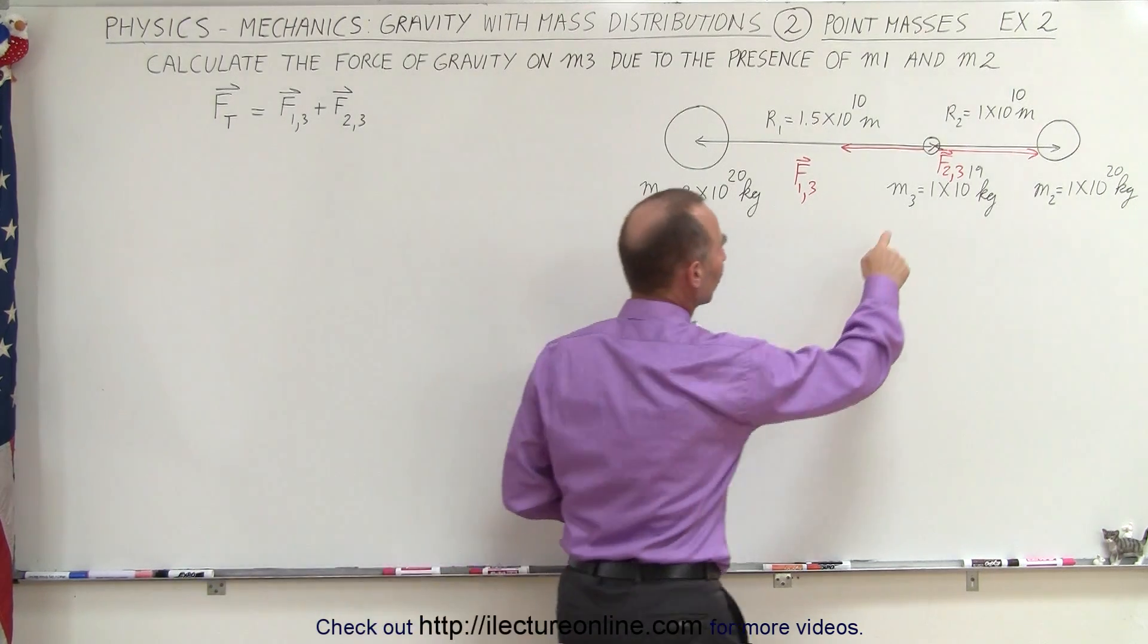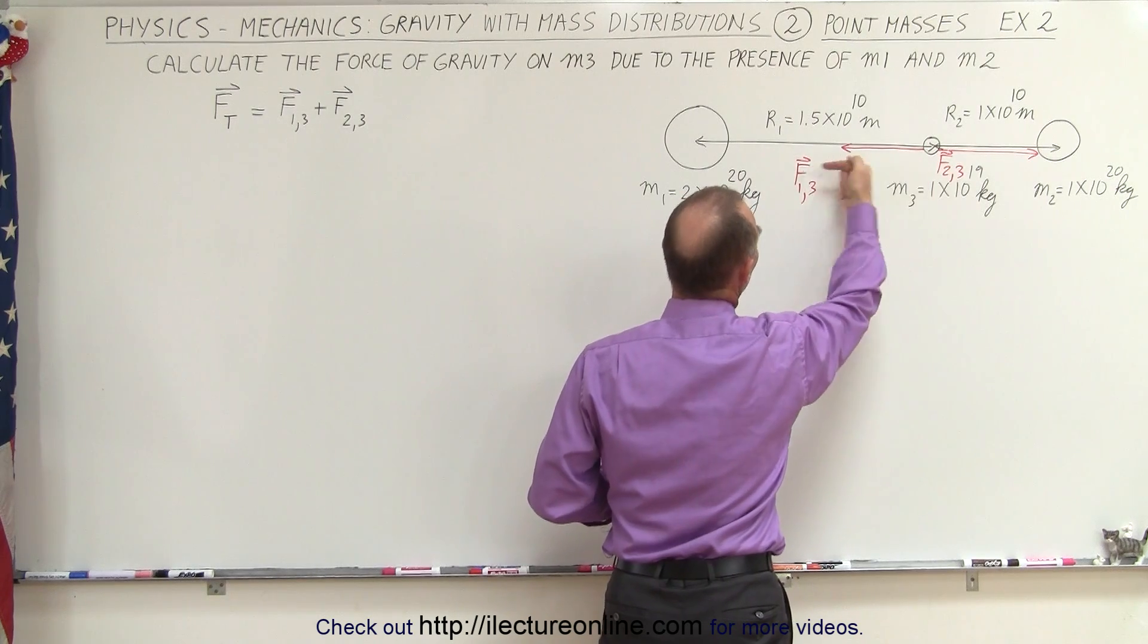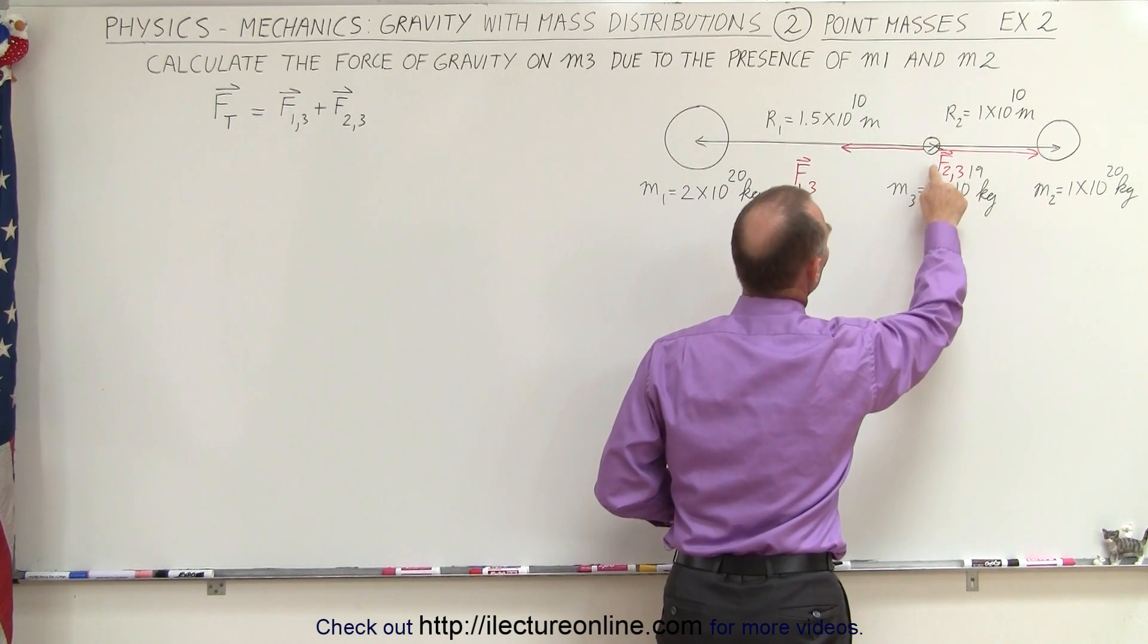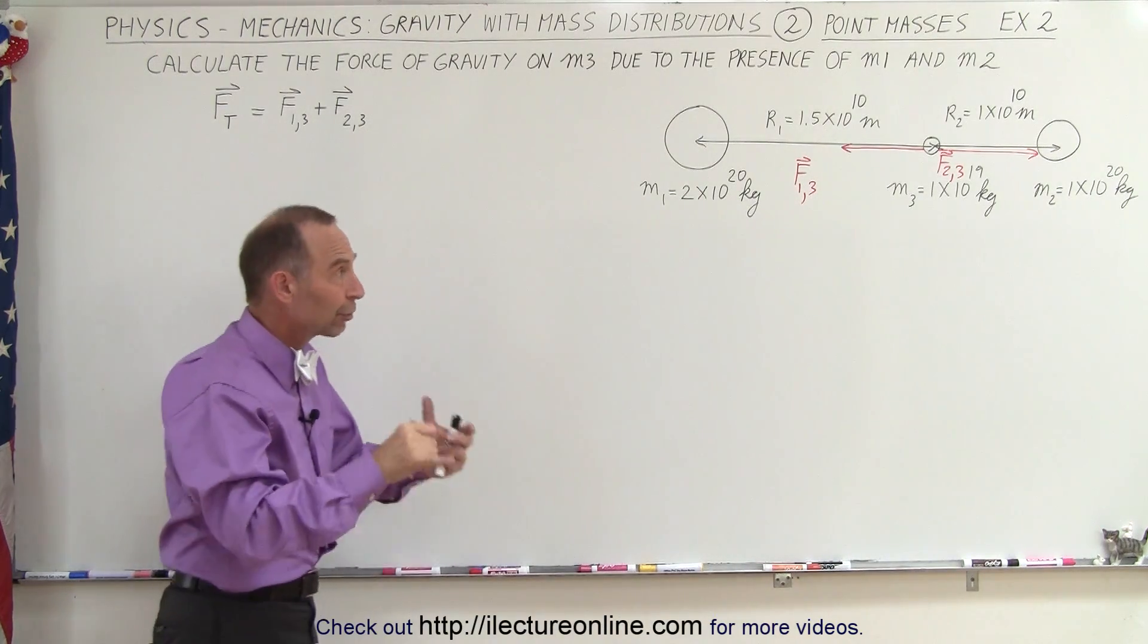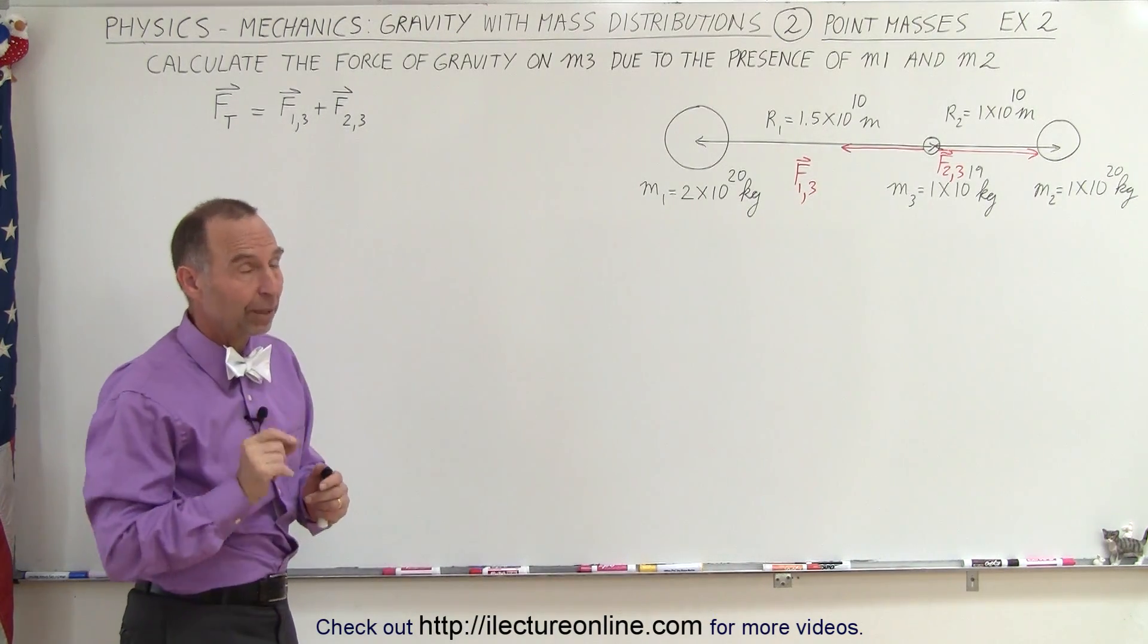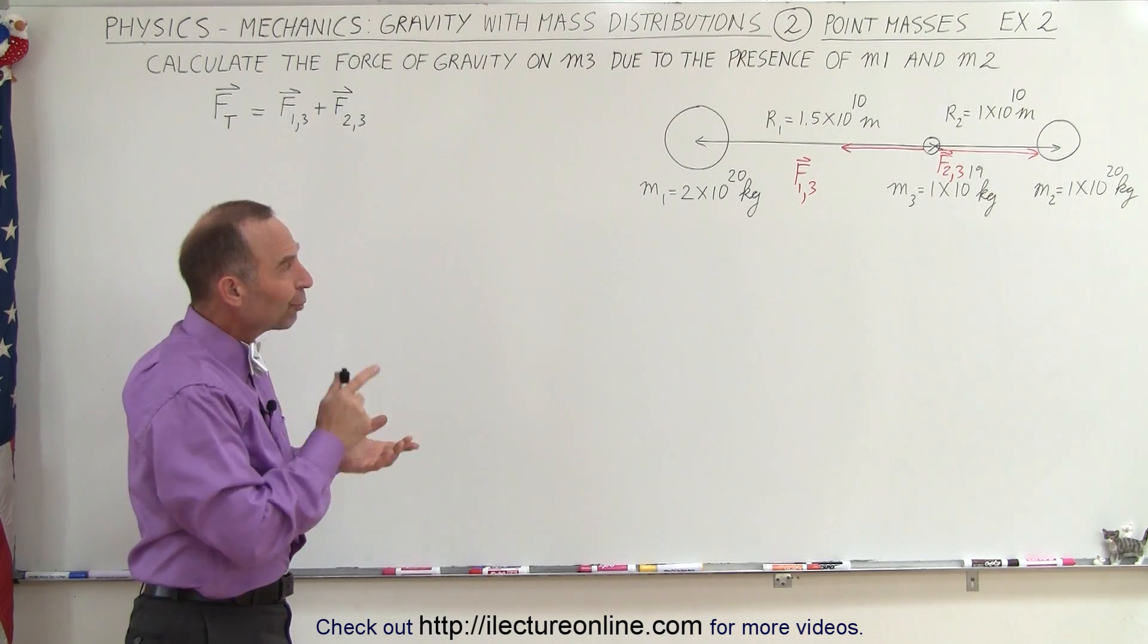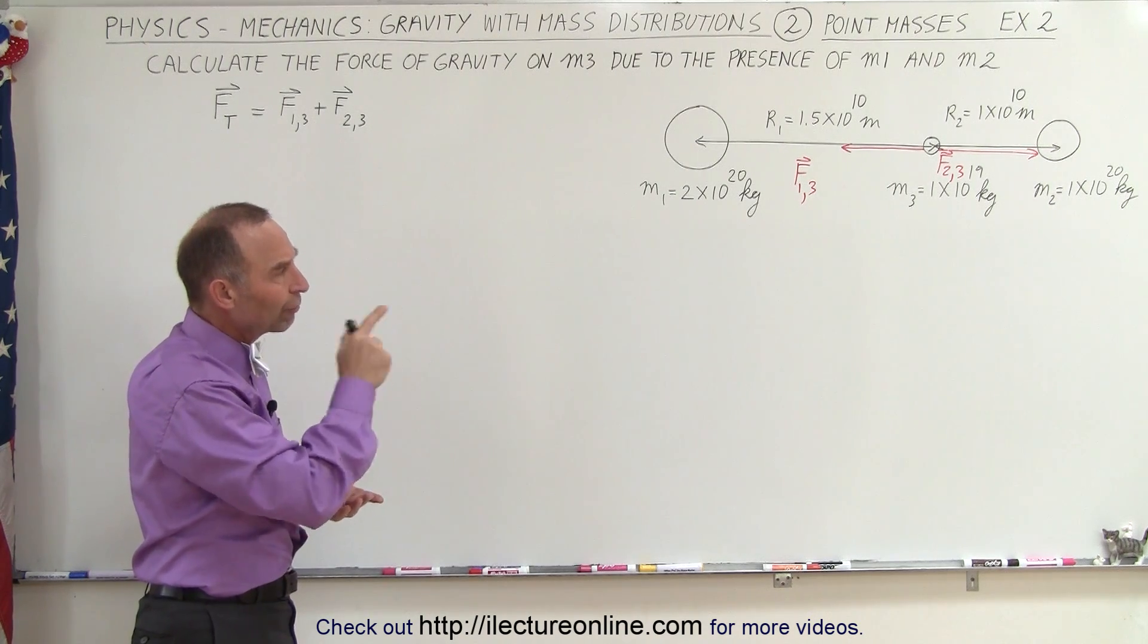Notice that we have the force of gravity between 1 and 3 to the left and the force of gravity between 3 and 2 to the right. So when we add them together, we'll have to add them vectorially and direction does play a role here. But first, we're going to find the magnitudes of the two forces.